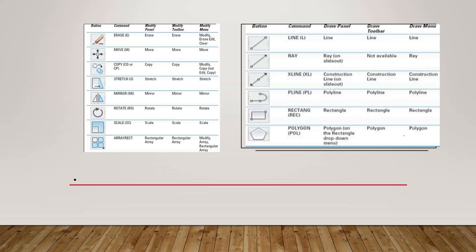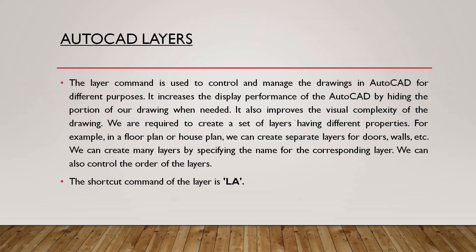You can add drawing commands or toolbar buttons such as erase, move, copy, switch command, mirror command, rotate, scale, and array command. Drawing commands also include line, ray, xline, pline, rectangle, polygon, etc. If you use AutoCAD commands, you can see the drawing is visible.